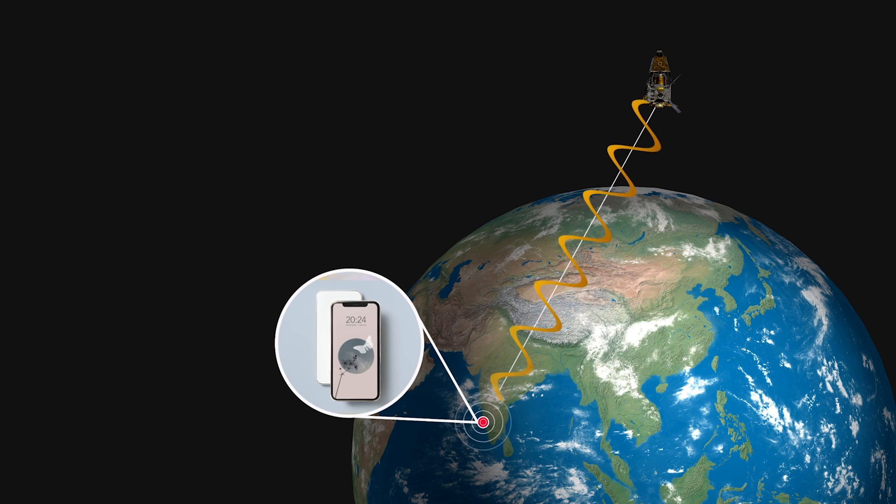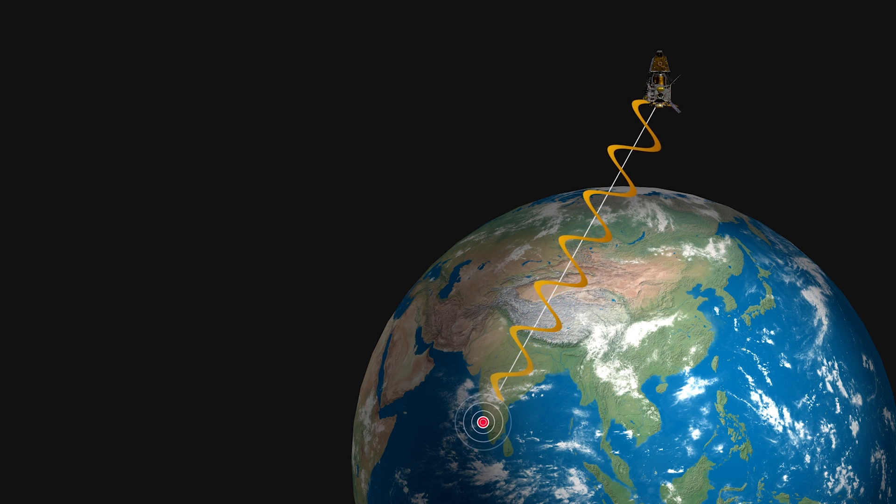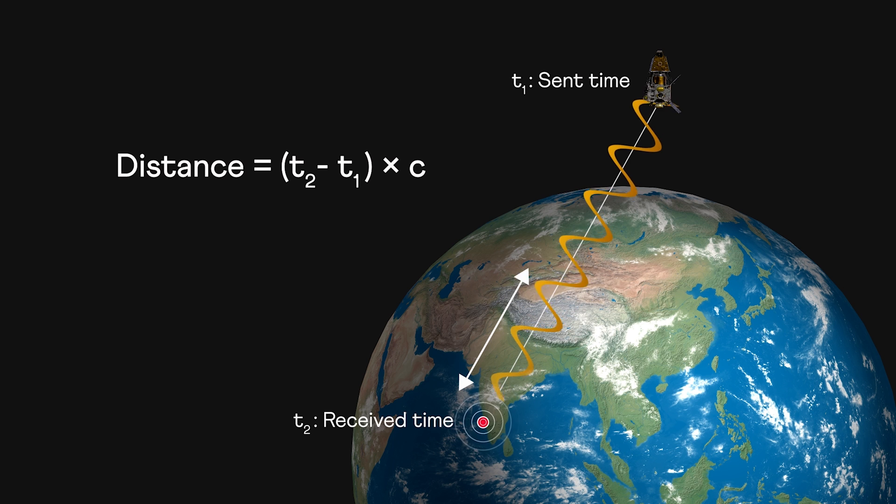GPS receivers in your phone pick up these signals and look at the difference between the sent and received times. By multiplying this time with the speed of light, we get the distance between your phone and the satellite. So how many satellites do we need to know your exact location?